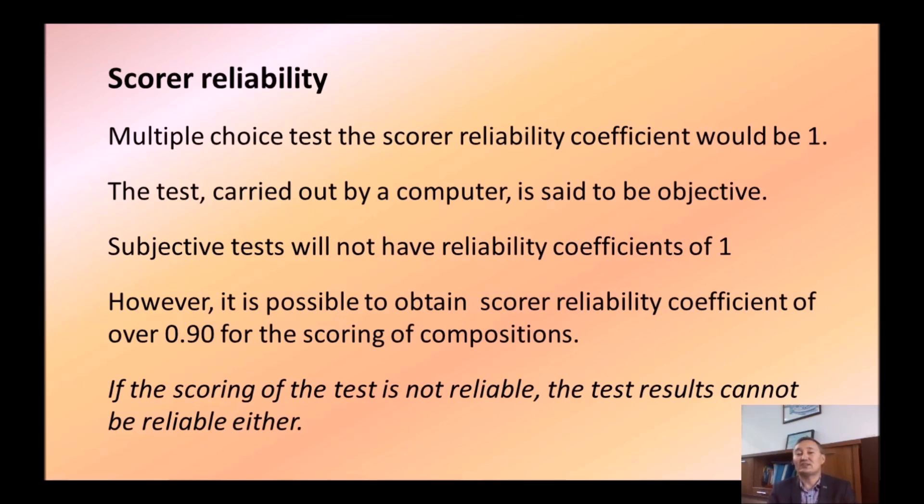The test carried out by a computer is said to be objective. This is very straightforward because computers, they don't have feelings, they are machines, they are very objective. You either pass or fail, for example, and they will never give you extra points. Some students might not like being evaluated by computers because they don't give any bonus points. Subjective tests will not have reliability coefficient of 1 because there is subjectivity. And especially if scorers are not professionals. If they do not know how to evaluate, well, the reliability coefficient might suffer a lot. However, it is still possible to obtain scorer reliability coefficient of over 0.90 for the scoring of compositions, if we use detailed rubrics and if we use trained scorers.